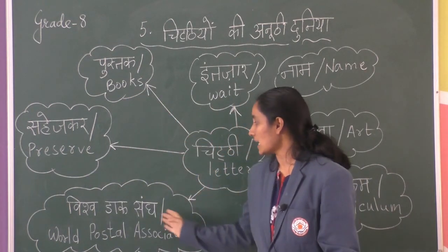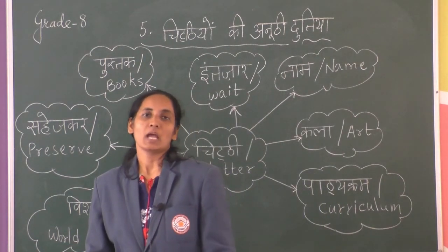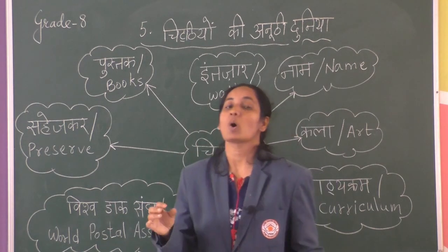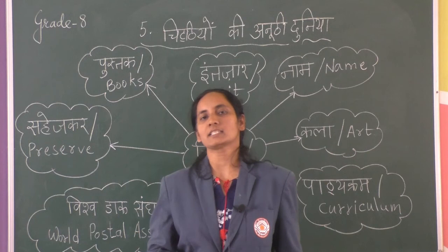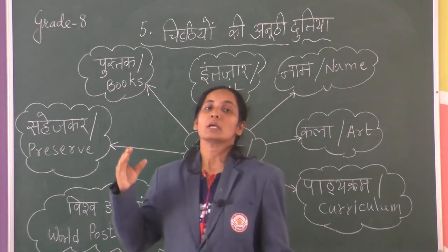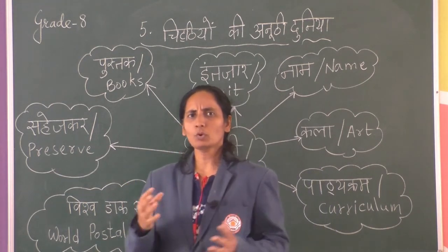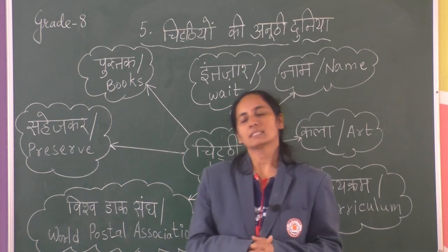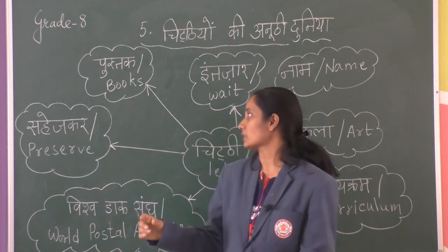Aur Vishwadaksang — World Postal Association — has also started to organize letter writing competitions under the age of 16 since 1972. 1972 se jo Vishwadaksang hai, wo pratyogita ayojit karthi hai for 16 saal ki umr se niche waale bacho ke liye. So they will get prizes for that.